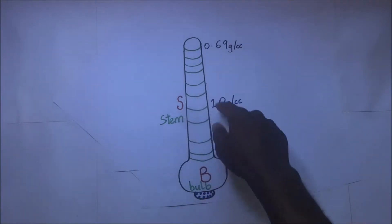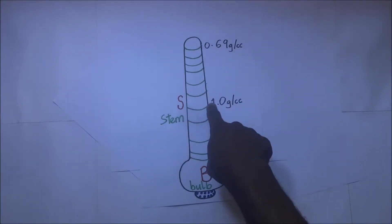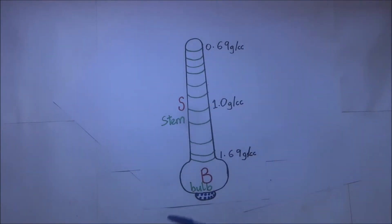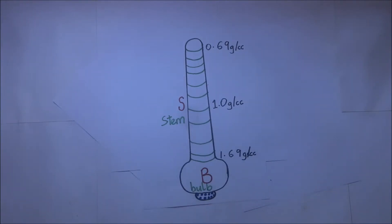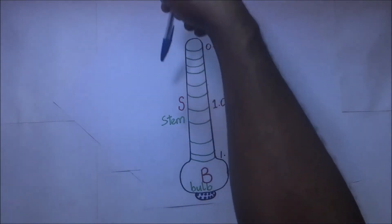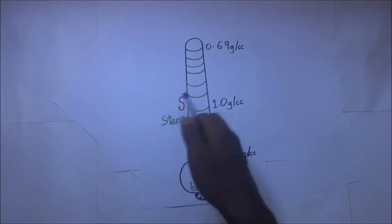When you look at this stem, at the midpoint we have 1 gram per cc, and this is the density of pure water. So how does this hydrometer work? Remember, it can be used to test the purity of water.